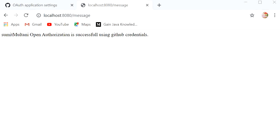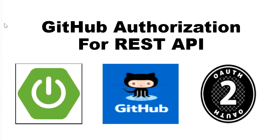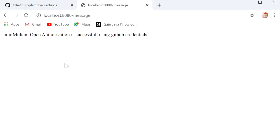So that was all about GitHub authorization for a REST API. The client application sends a request with client ID to the GitHub authentication server. The GitHub authentication server passes this request to the GitHub authorization server, which passes it back to the client application. Then the main request is processed by the GitHub resource server and the client application receives the response message.